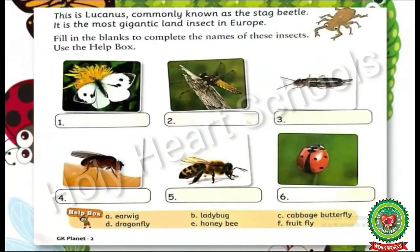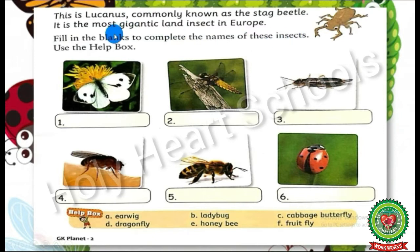Now we will start with our exercise part. So put your pencil here. Fill in the blanks to complete the names of these insects. Use the help box. In this exercise, the pictures of insects are given and we have to write the names of the insects in the boxes. But before starting the exercise, we will discuss about these insects one by one.